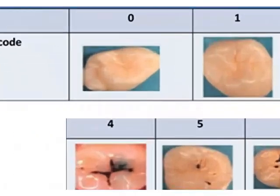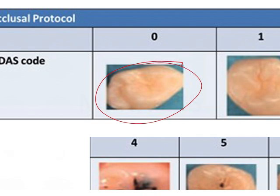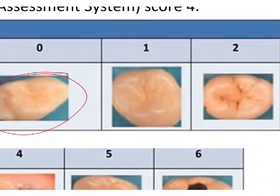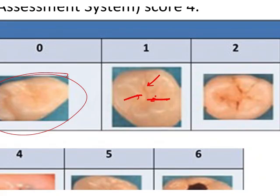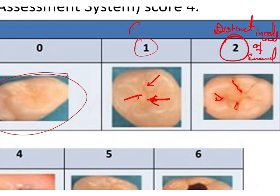Looking at the figures: score 0 is your sound tooth structure — there are no visual changes at all. In score 1, you will see some initial visual changes, and those changes are in the enamel only. In score 2, there is marked involvement of the enamel — no lesion exposing the dentin, but distinct involvement of the enamel. Score 1 is initial changes in enamel; score 2 is marked enamel involvement.